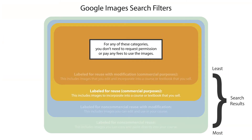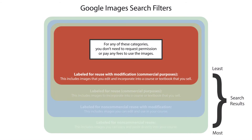Those labeled for reuse include images that you can incorporate into a course or textbook that you sell. While those labeled for reuse with modification include images that you can edit and incorporate into a course or textbook that you sell. These are few and far between, which is why they yield the least search results.